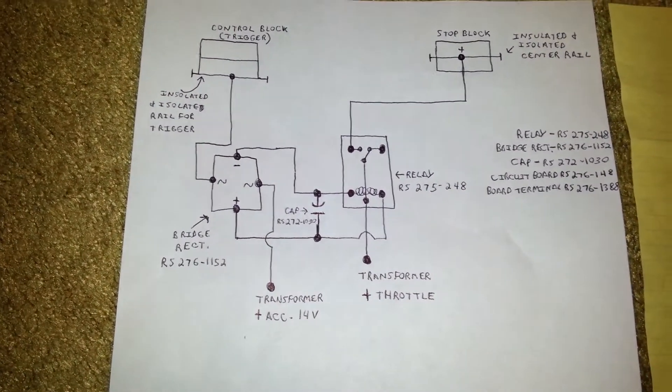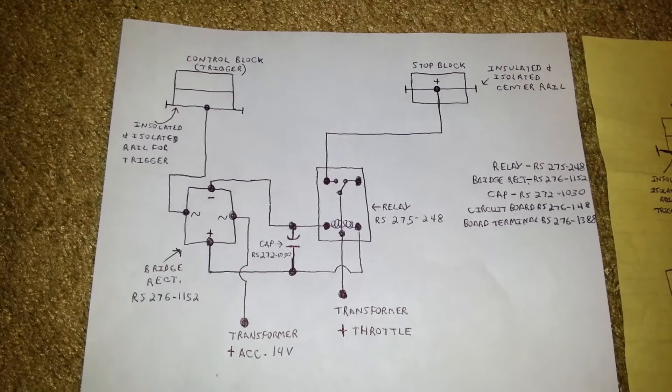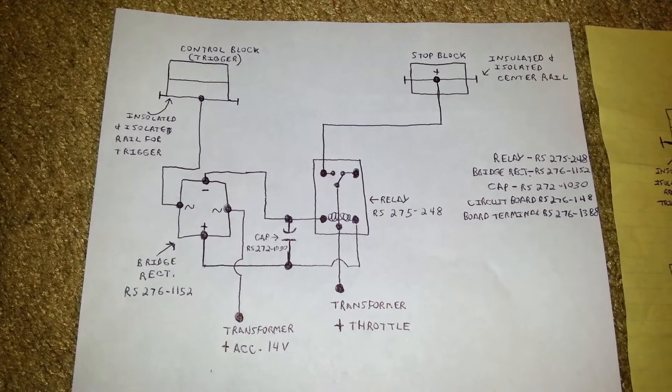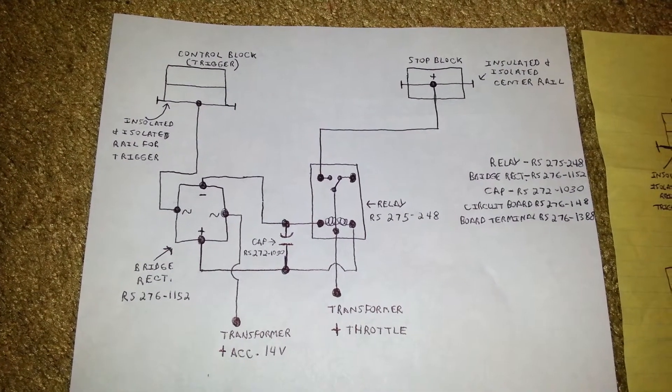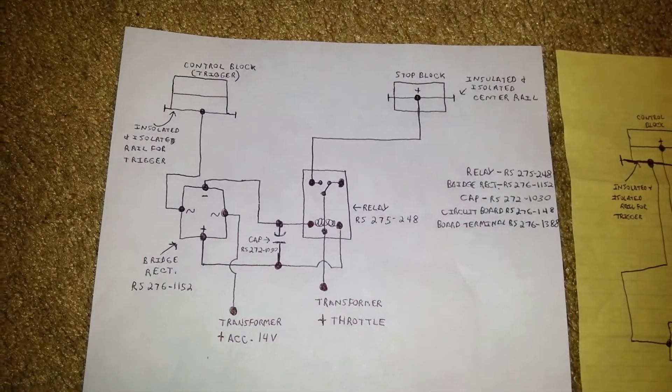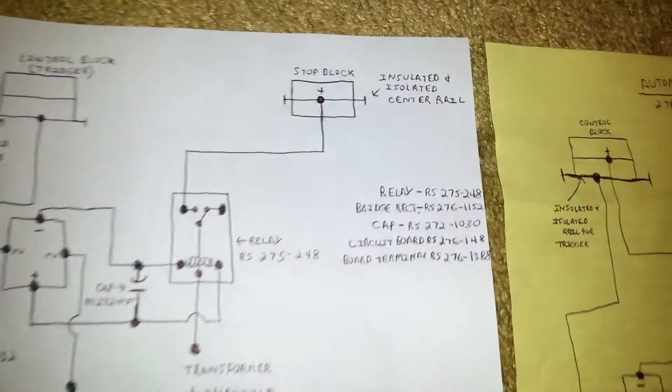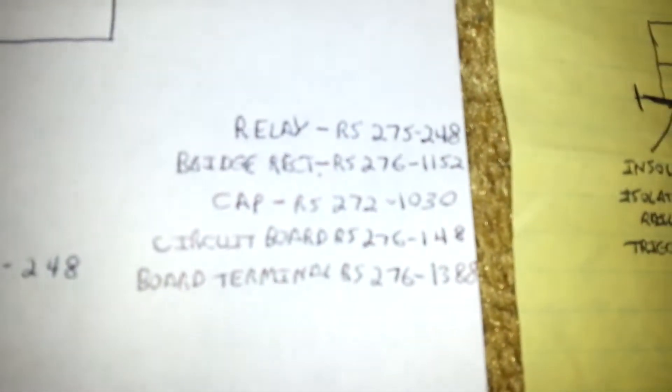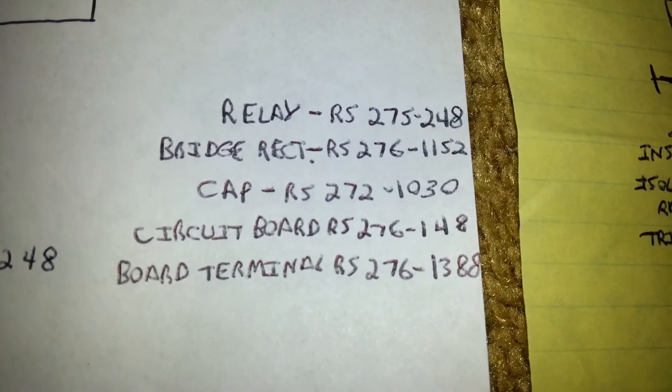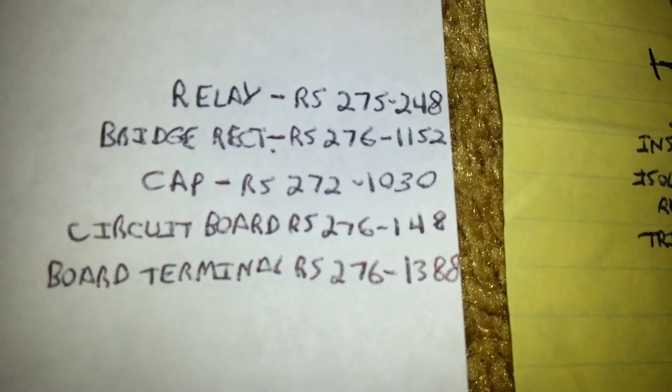And that's really all I'm doing here. There really isn't anything else to it. As far as the parts that I use, there's the bridge rectifier, the capacitor, the relay, the board terminal where the wire is attached to, and the circuit board itself. These are all purchased from Radio Shack very inexpensively.